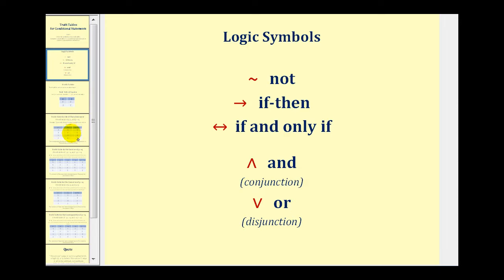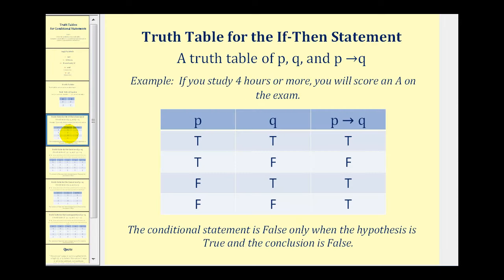Let's take a look at our first example. We want to complete the truth table for P, Q, and if P then Q. The first thing we have to do is list all the possible combinations of true and false for P and Q. Since there are two options for P — true or false — and two options for Q — true and false — that tells us we need four rows.